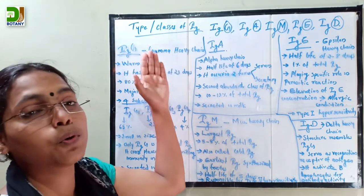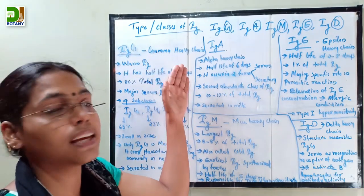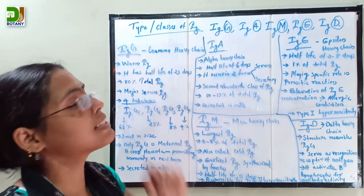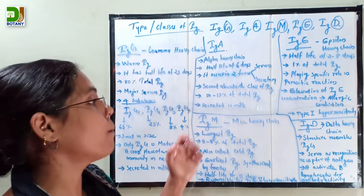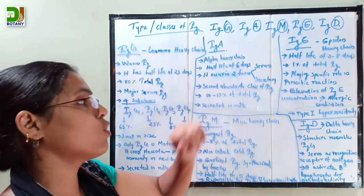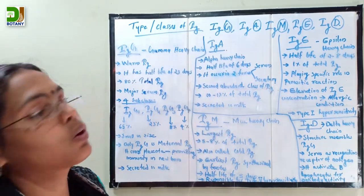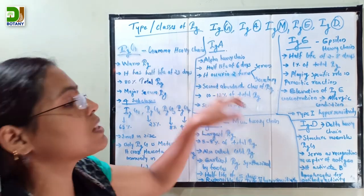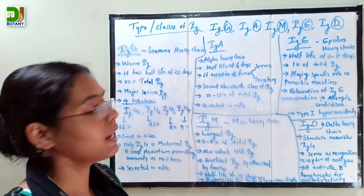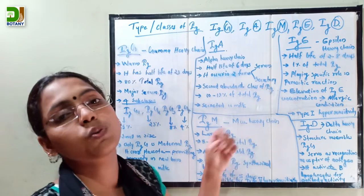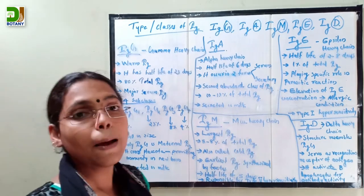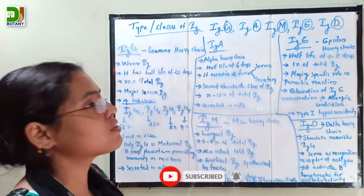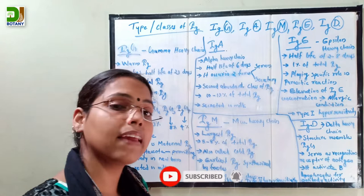After immunoglobulin G, immunoglobulin A is the second most abundant class, containing 10 to 30% of total immunoglobulin. It is also secreted in milk.